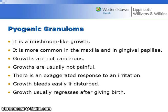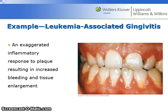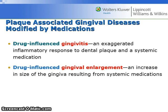The growth bleeds easily if disturbed and usually regresses after giving birth. Leukemia-associated gingivitis is an exaggerated inflammatory response to plaque, resulting in increased bleeding and tissue enlargement. Drug-influenced gingivitis is an exaggerated inflammatory response to dental plaque along with a systemic medication.